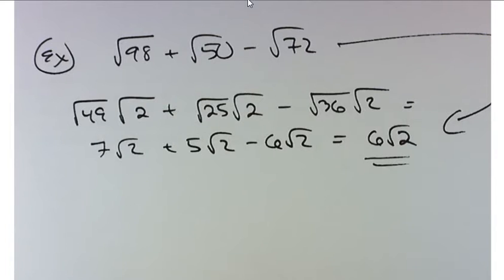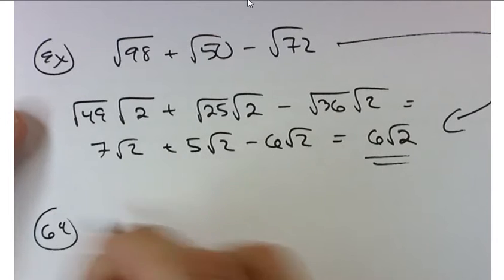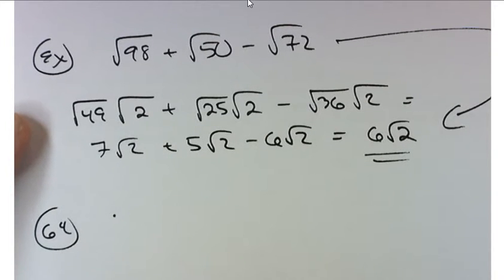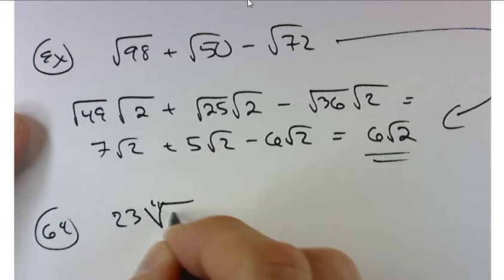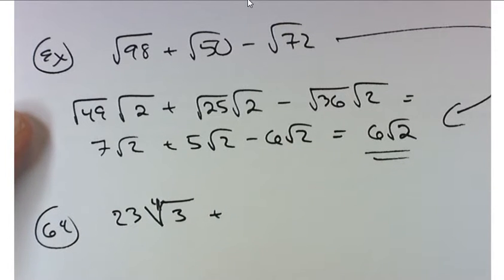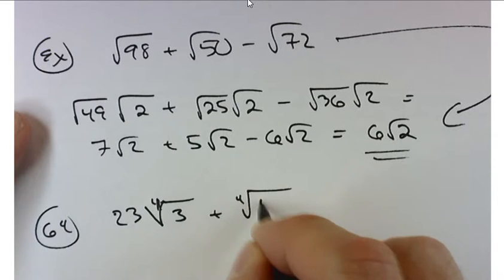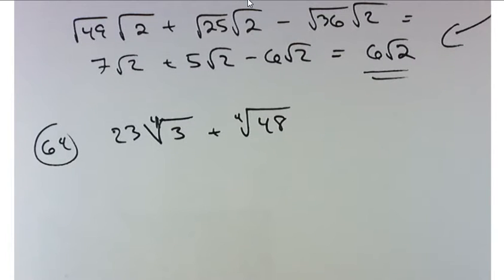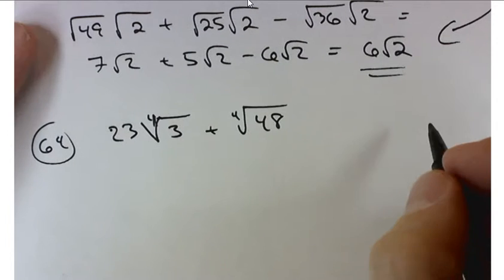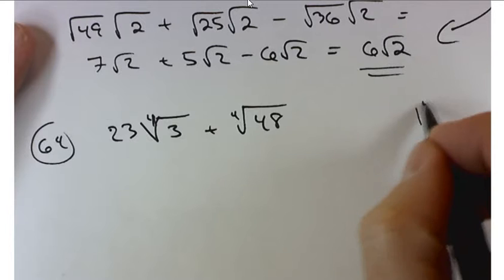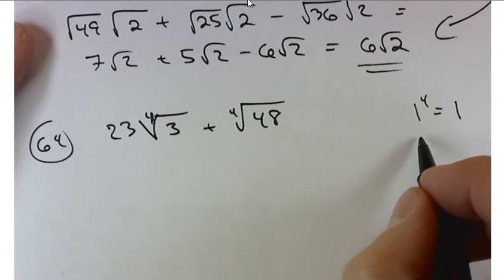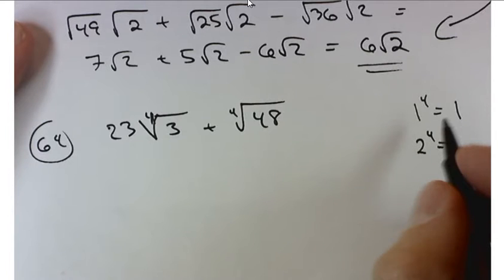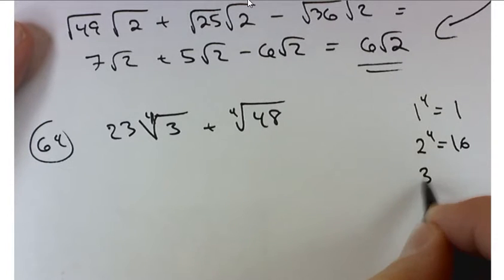We'll start out kind of gently with problem number 64: 23 times the 4th root of 3 plus the 4th root of 48. I don't happen to have a list of perfect 4th powers on the left hand side board - I stopped at cubes. But let's just generate one for ourselves real quick. 1 to the 4th power is 1, we're never really going to need that. 2 to the 4th power? 16. 3 to the 4th power is 81. That's far enough.